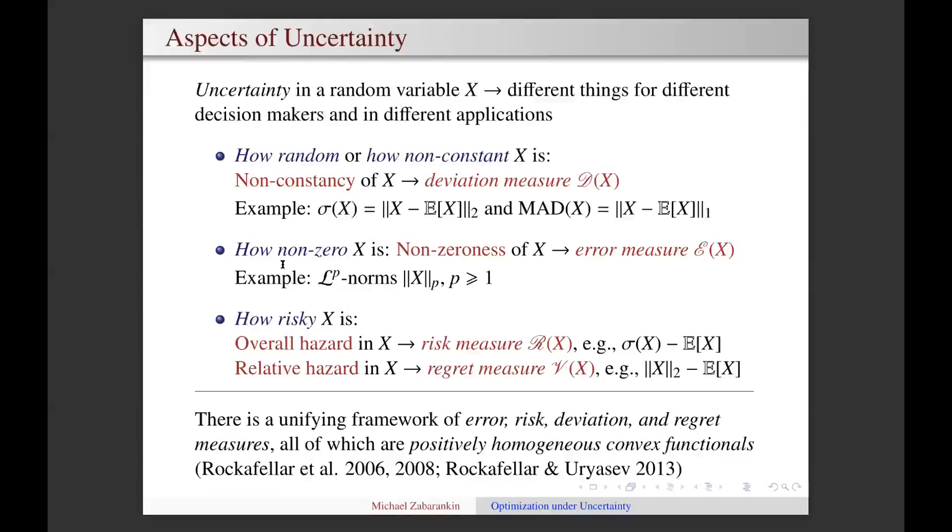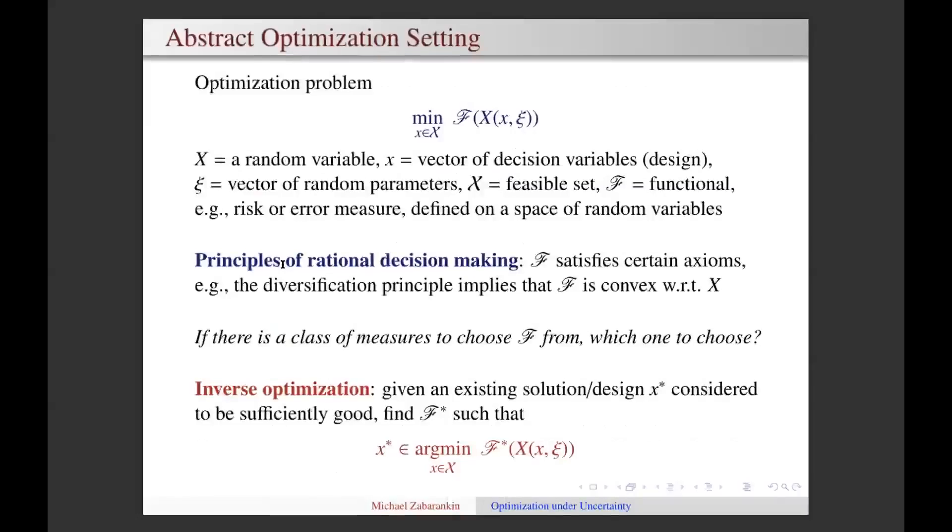In fact, there is a unifying framework of error, risk, deviation, and regret measures developed by Rockafellar et al. All such measures are positively homogeneous convex functionals, and they differ just in some aspects on how they treat random variables. For example, a deviation measure is insensitive to adding a constant to a random variable, and the risk measure of a constant is the same constant just with a negative sign.